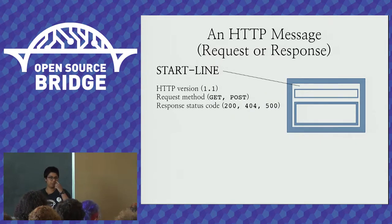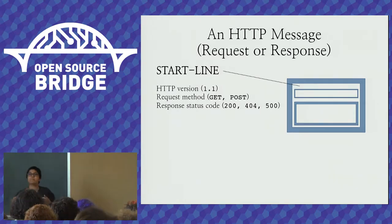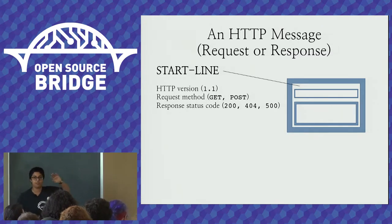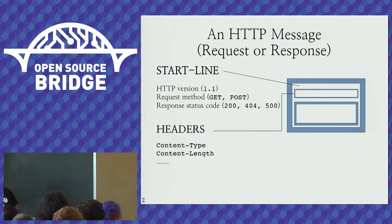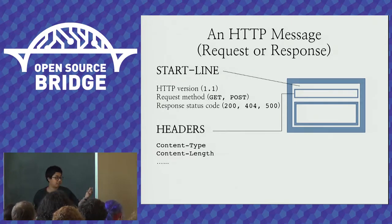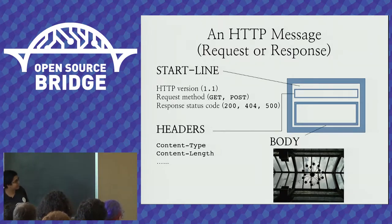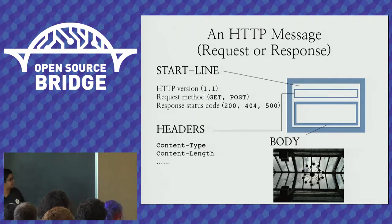In the start line, if it's a request, you have the request method such as GET or POST. If it's a response, you have the response status code — those integers. The second part of a message is the headers, like what type of content is this, and what is the length of the content. The third part is an optional body, sometimes called the payload. Maybe more message bodies should be pretty pictures of chandeliers — I don't know.